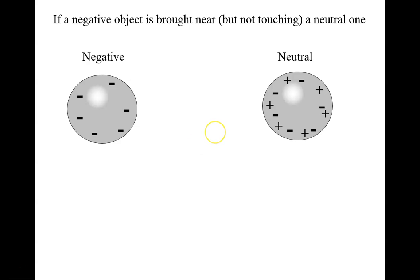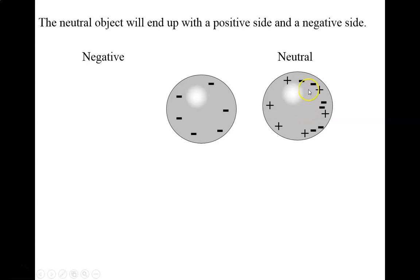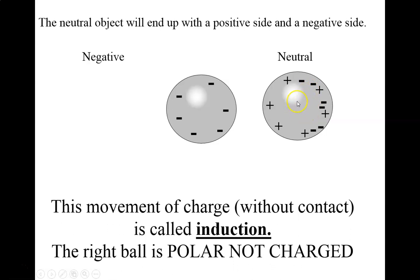If I bring a negatively charged object near — but not touching — a neutral object, that's a different form of charging. I'm going to cause the electrons on one side to repel to the other side. Now I have a positively charged half of the object and a negatively charged half. This movement of charge without contact is called induction. This object is now polar — it's got a positive side and a negative side, similar to polar and non-polar concepts in chemistry.